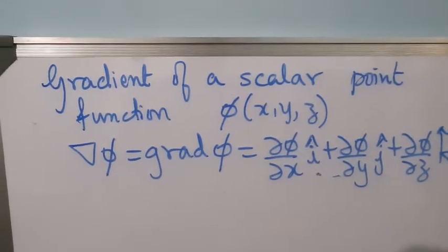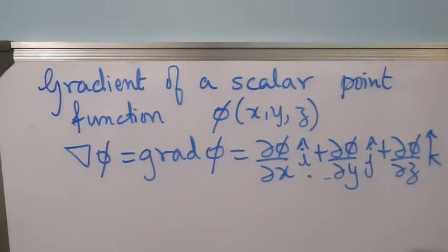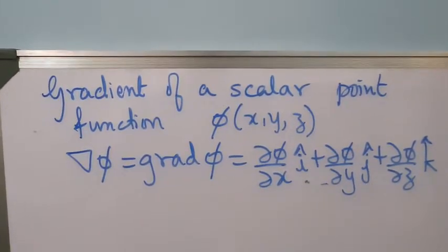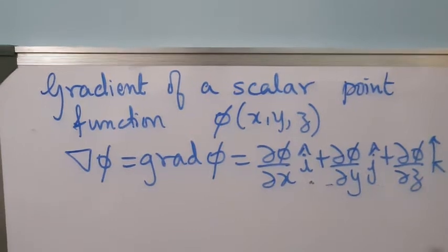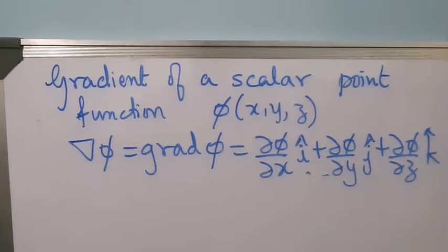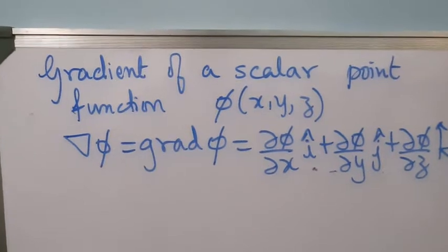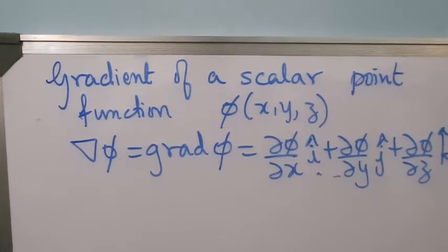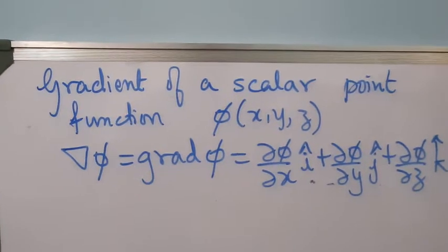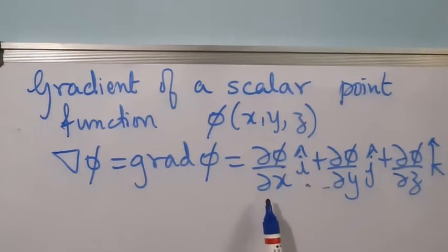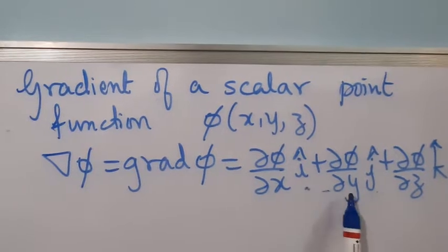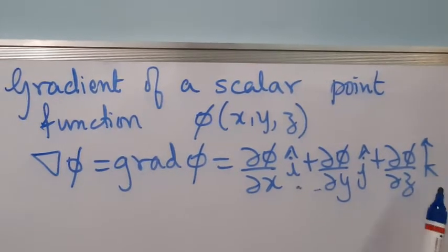Hello students. In this lecture we will see how to find the gradient of a scalar point function and the physical significance or geometrical meaning of gradient of a scalar point function. In the previous video we defined gradient of a scalar point function as ∂φ/∂x î + ∂φ/∂y ĵ + ∂φ/∂z k̂.